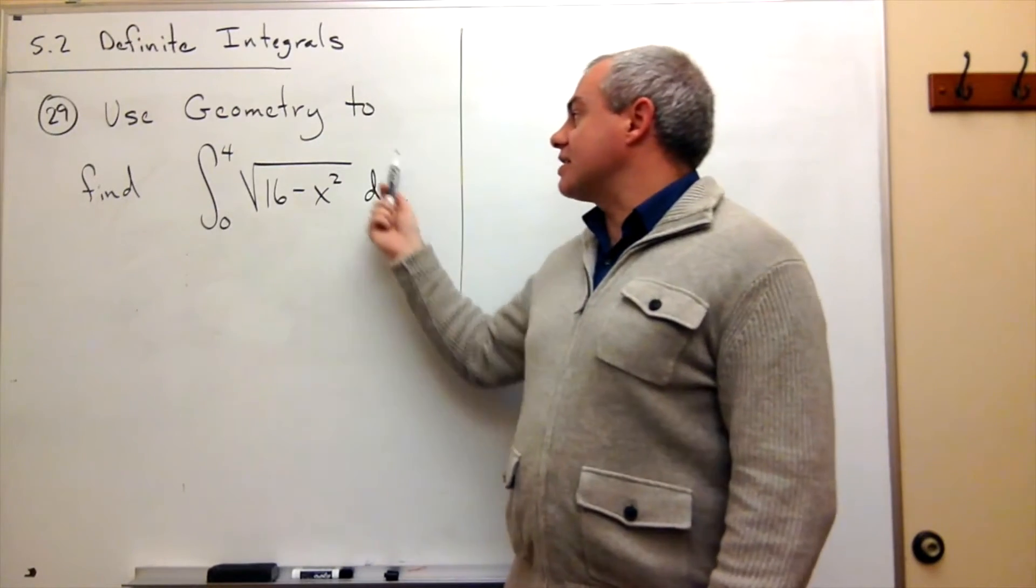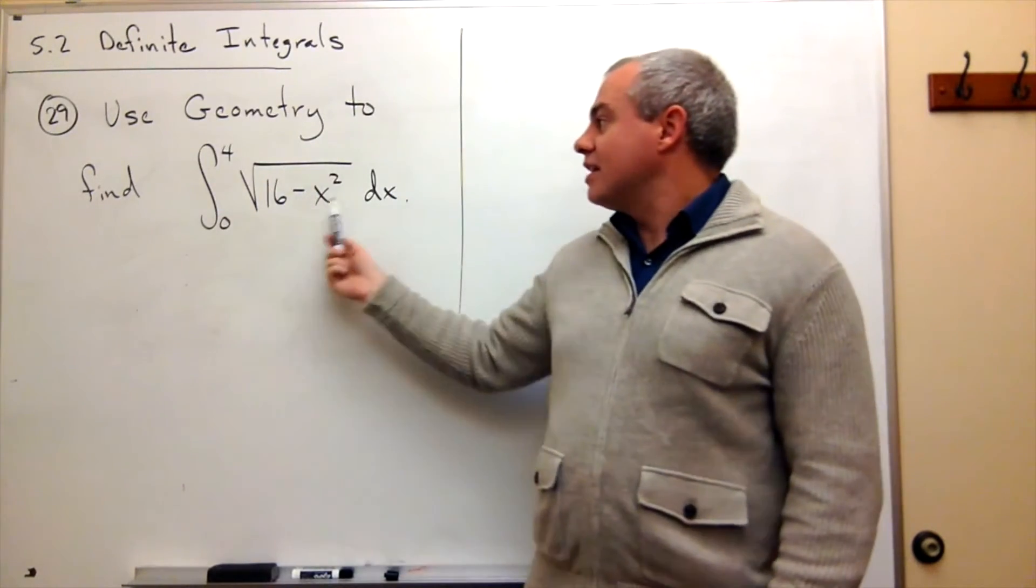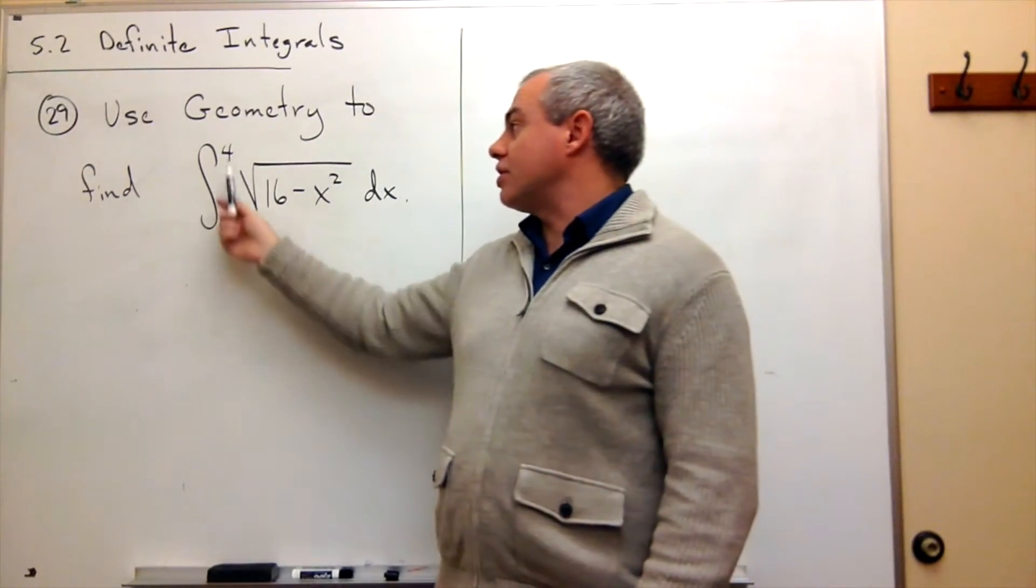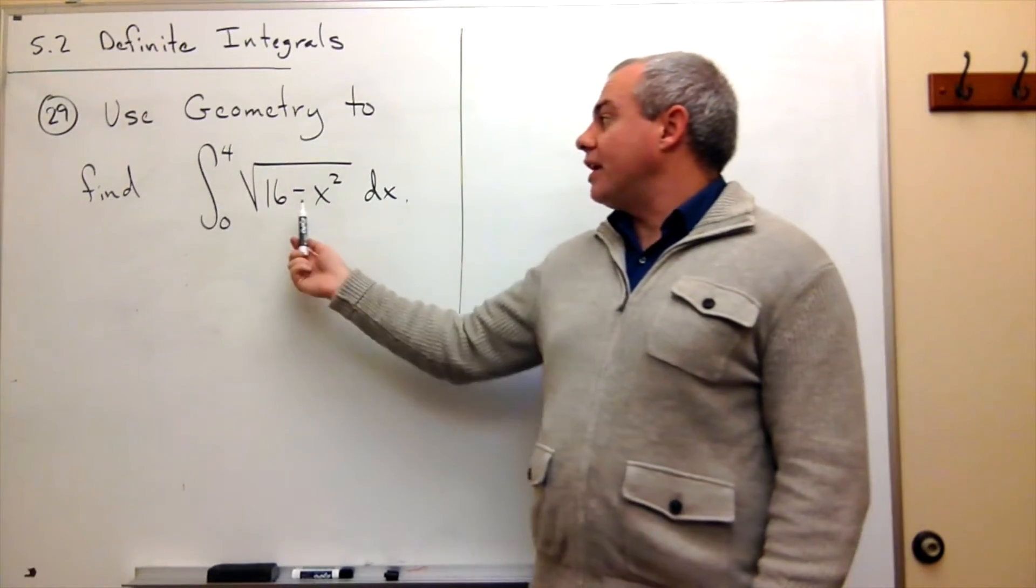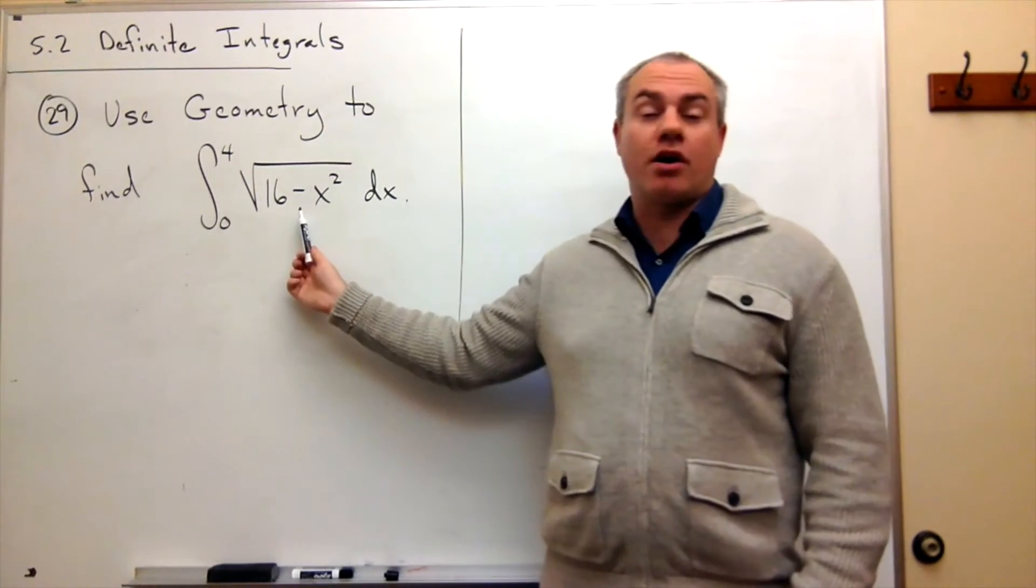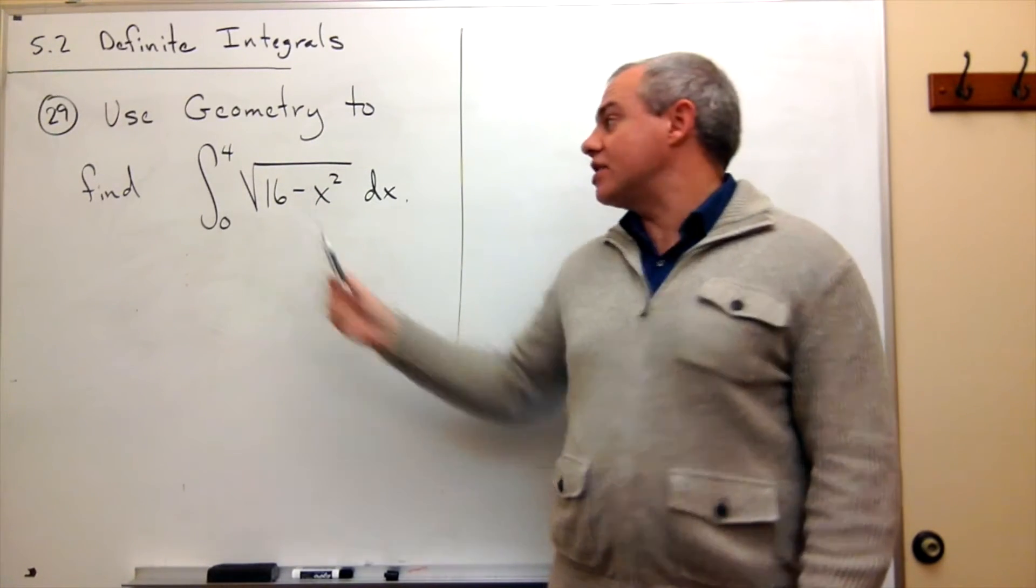Well, what this means is calculate in some sense, since this is always a positive function between 0 and 4, then all we're really asking here is what is the area under this curve?